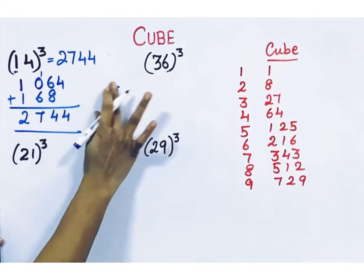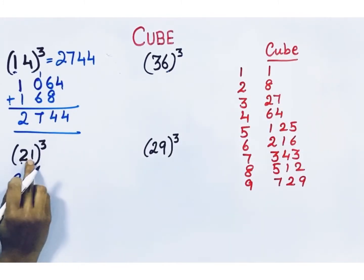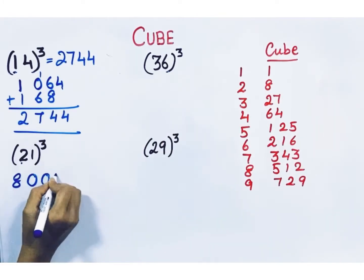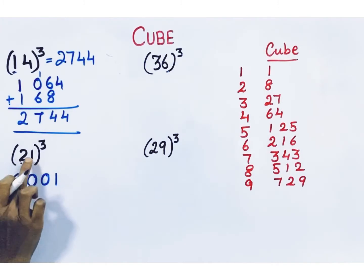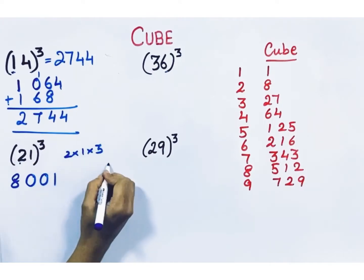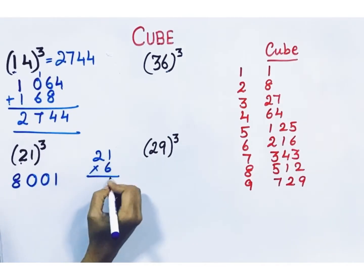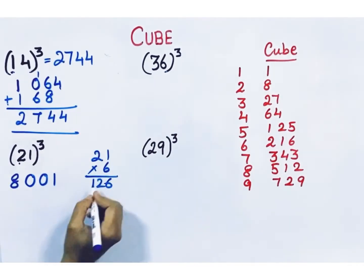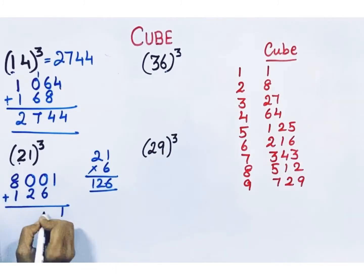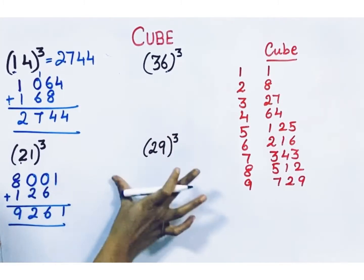Next, cube of 21. Take 2 — 2 cube is 8. Then 1 — 1 cube is 1. Write 1 as a 3-digit number: 0, 0, 1. Next, take 2, multiply with 1, then multiply with 3 — so it's 6. Take the number 21 and do multiplication — the answer is 126. Write this product here, leave one space and write like this. Then do the addition. The cube of 21 is 9261.